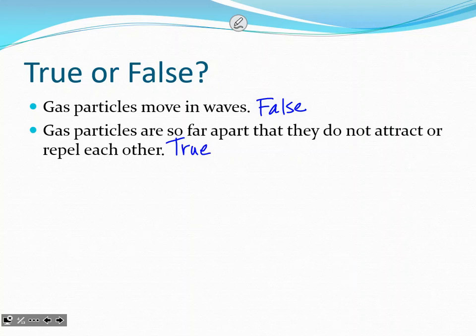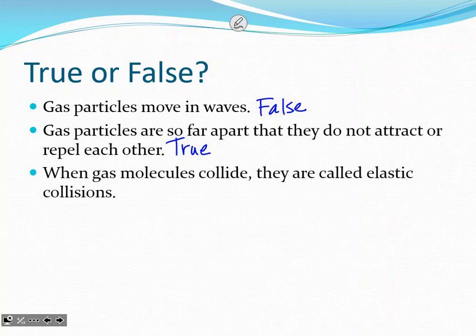When gas particles collide, they are called elastic collisions — true. They are perfectly elastic collisions, meaning no kinetic energy is lost. Particles bounce back with an equal amount of kinetic energy, whether hitting the walls or hitting another particle.